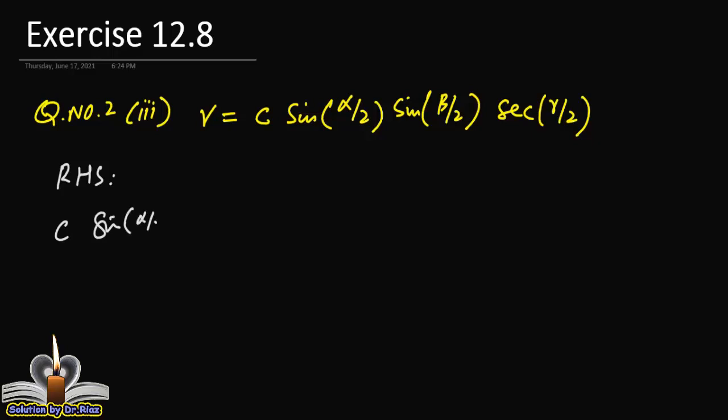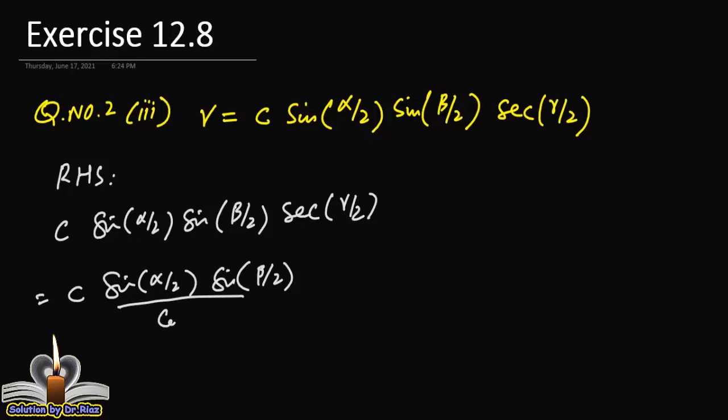sin alpha by 2 into sin beta by 2 into secant gamma by 2. This can be written as sin alpha by 2, sin beta by 2, and now secant which goes down, cos gamma by 2.